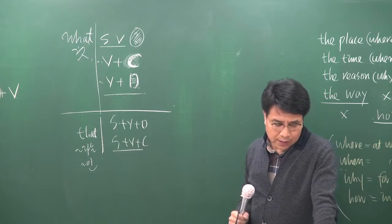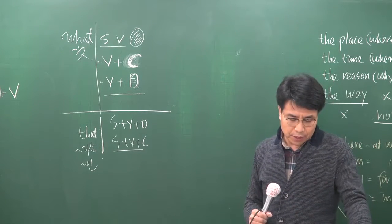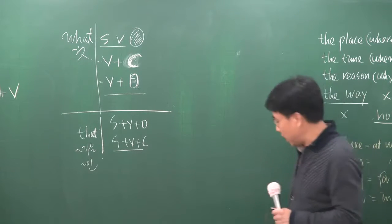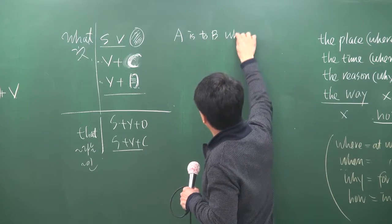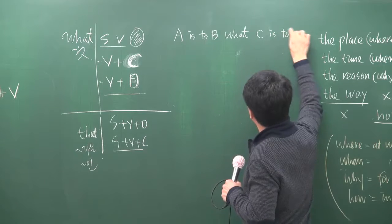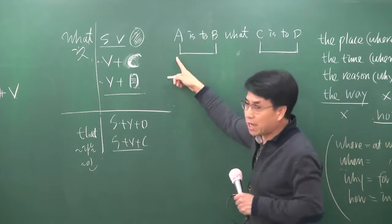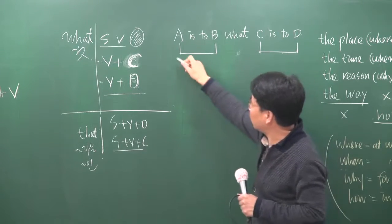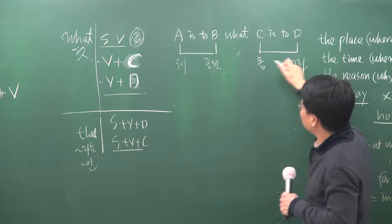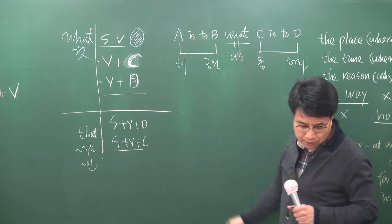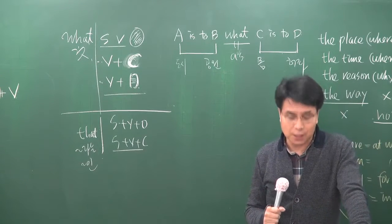내가 생각했던 것 → what I thought로 고칩니다. Reading is to the mind ___ food is to the body: 이건 관용 표현으로 'A is to B what C is to D' 구문입니다. 독서와 정신의 관계는 음식과 몸의 관계와 같다. that을 what으로 바꿉니다.